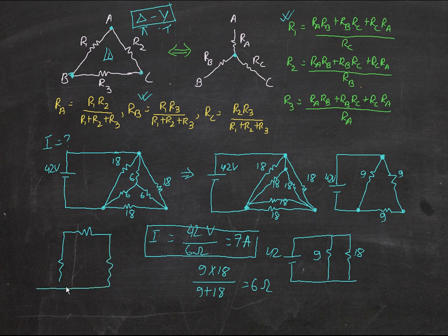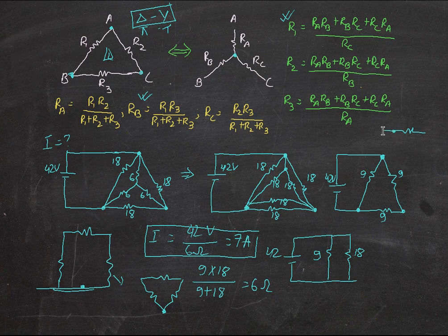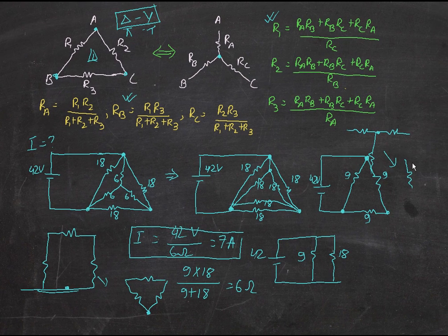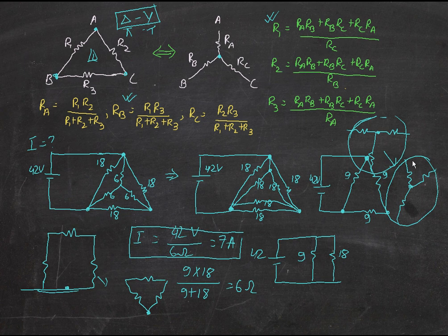Notice that the Pi circuit is actually just another Delta — if you take each node as one point, you can see the Delta shape. And the T format is just Y — if you invert the resistors and draw them this way, they're basically the same. Pi-T and Delta-Y are the same thing; you just visualize them differently. The yellow formula converts Delta to Y, and the green formula converts Y to Delta. I hope you understood the tutorial — please subscribe and give a thumbs up if you want more. Good luck!